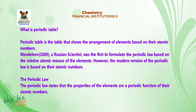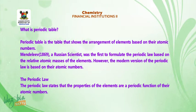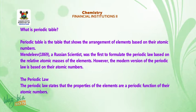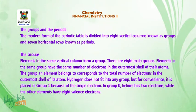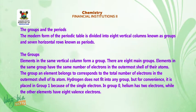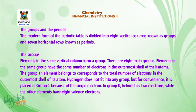The periodic law states that the properties of the elements are a periodic function of their atomic numbers. The modern form of the periodic table is divided into 8 vertical columns, known as groups, and 7 horizontal rows, known as periods.